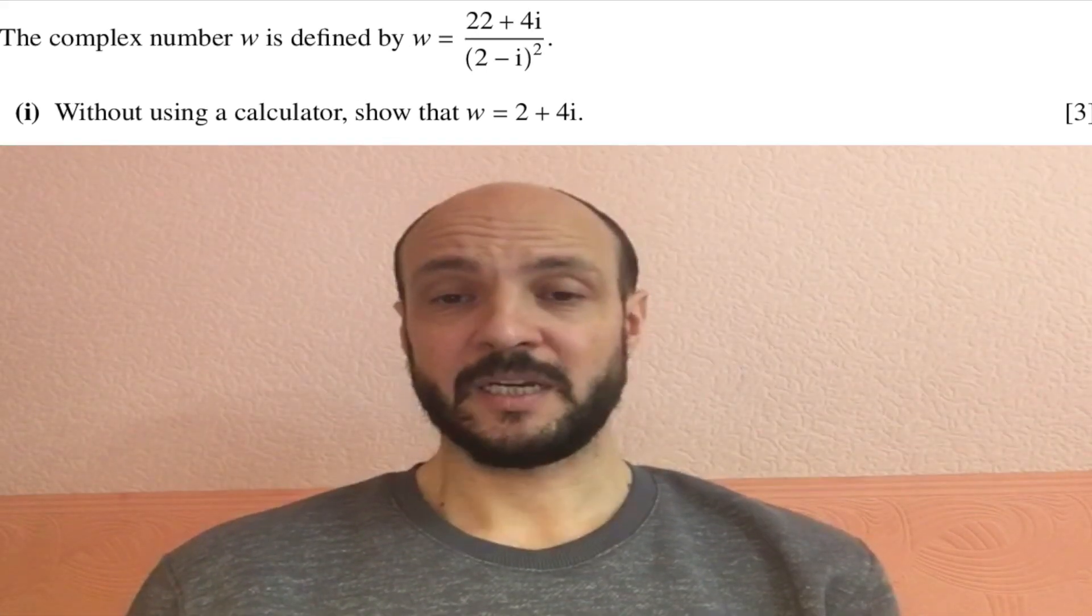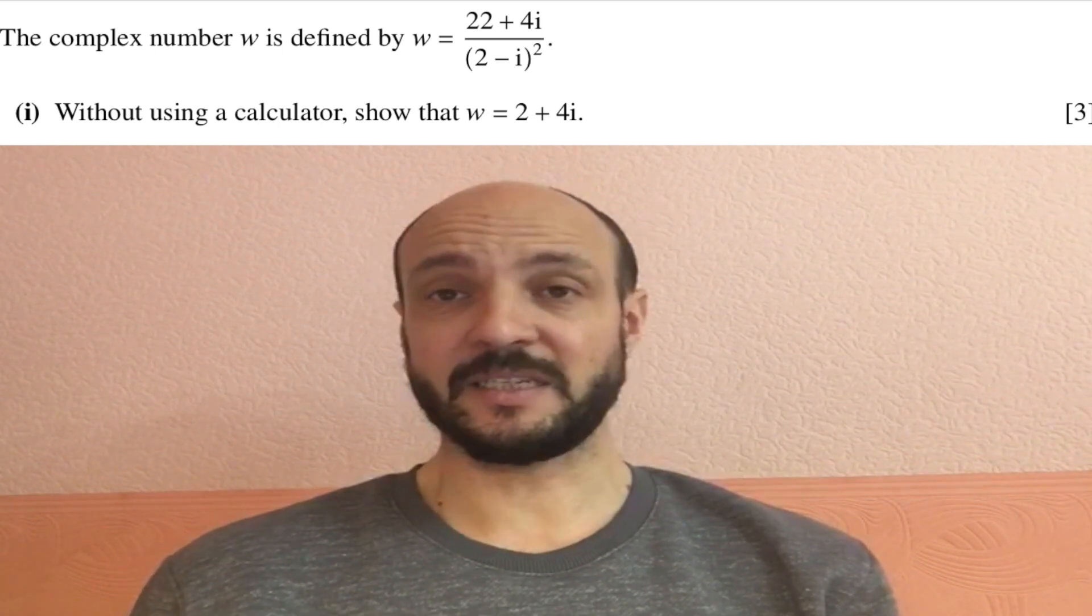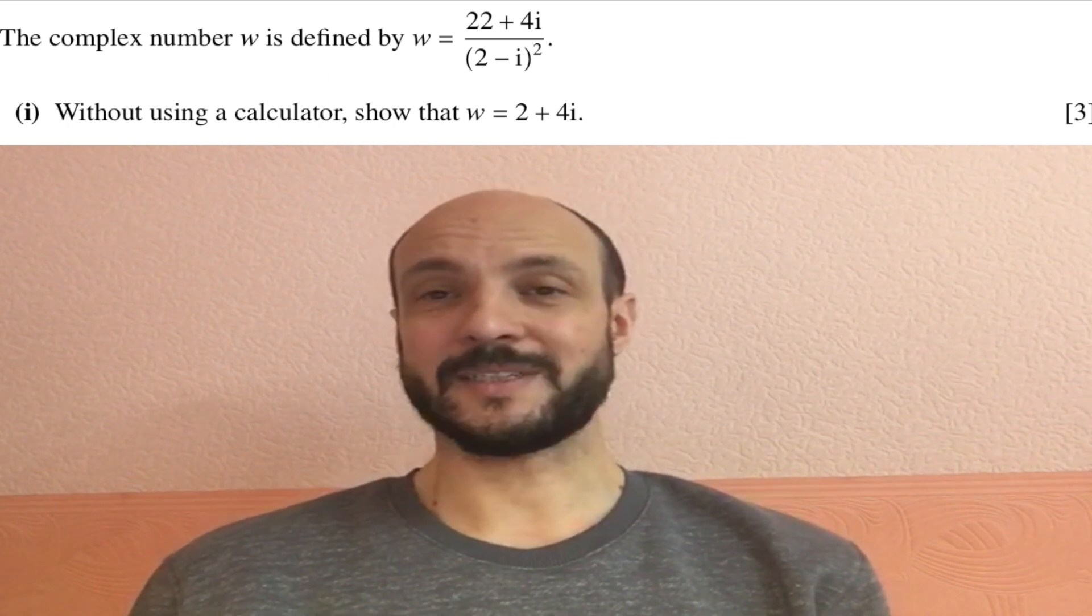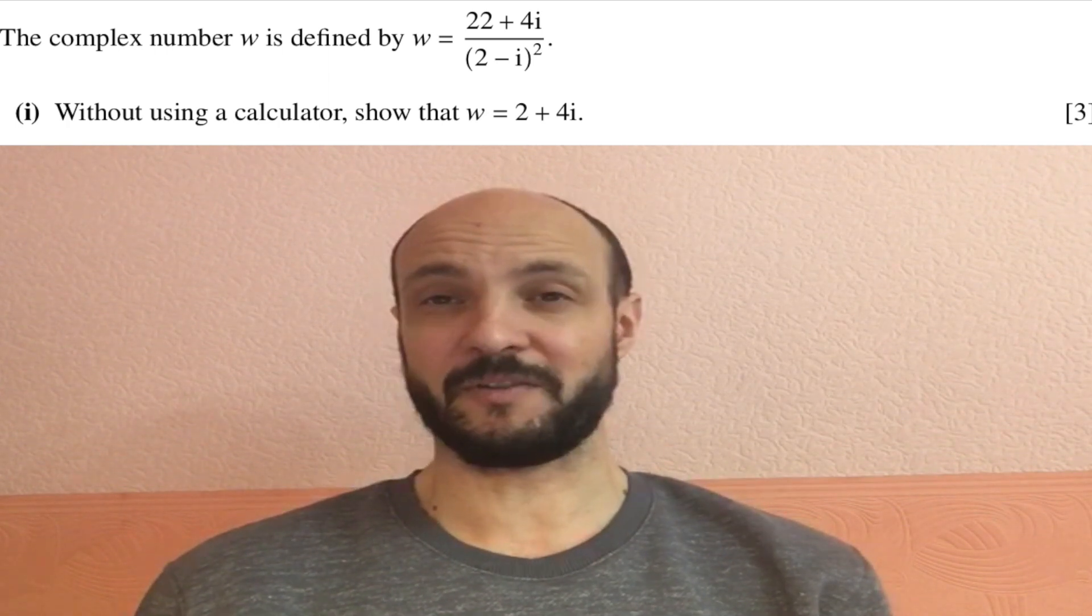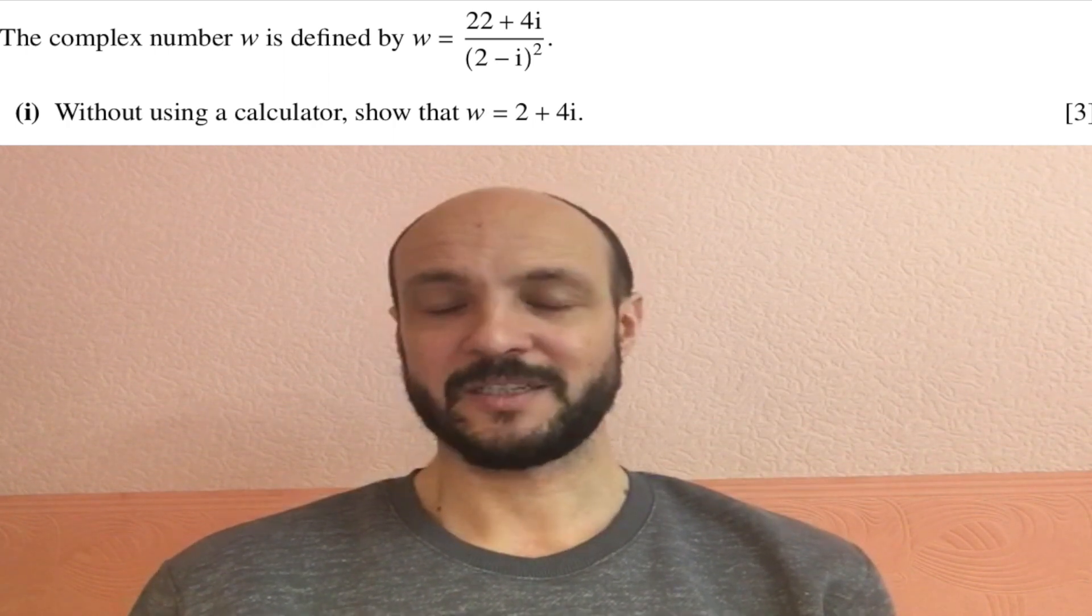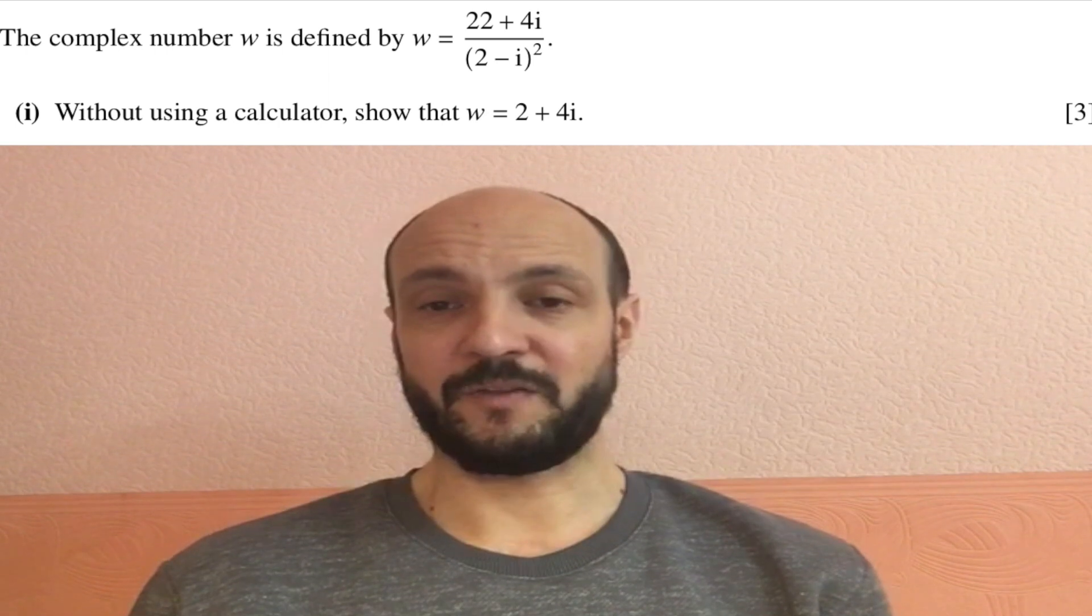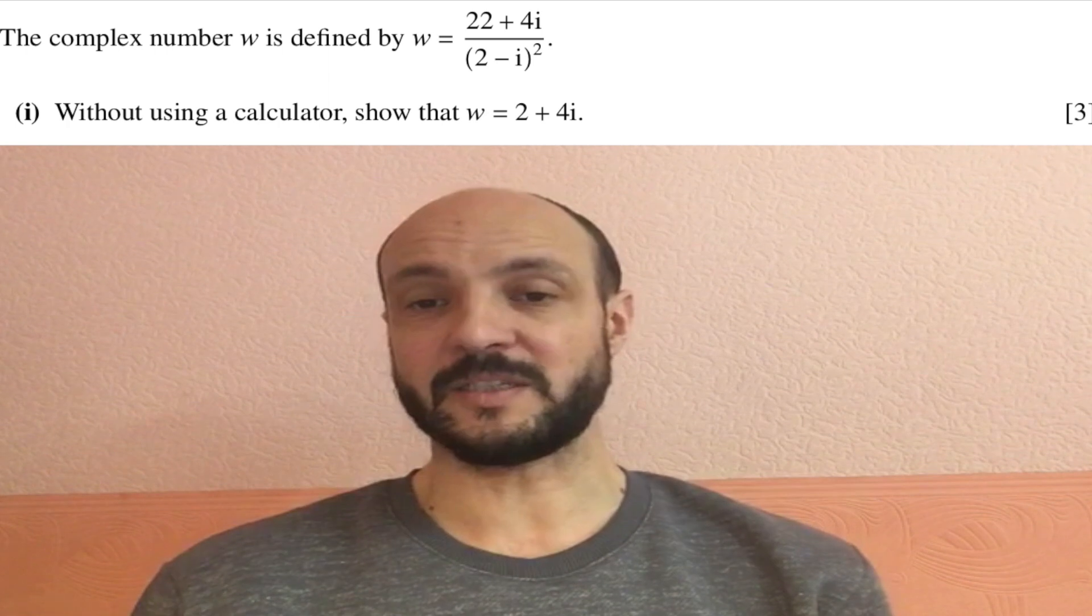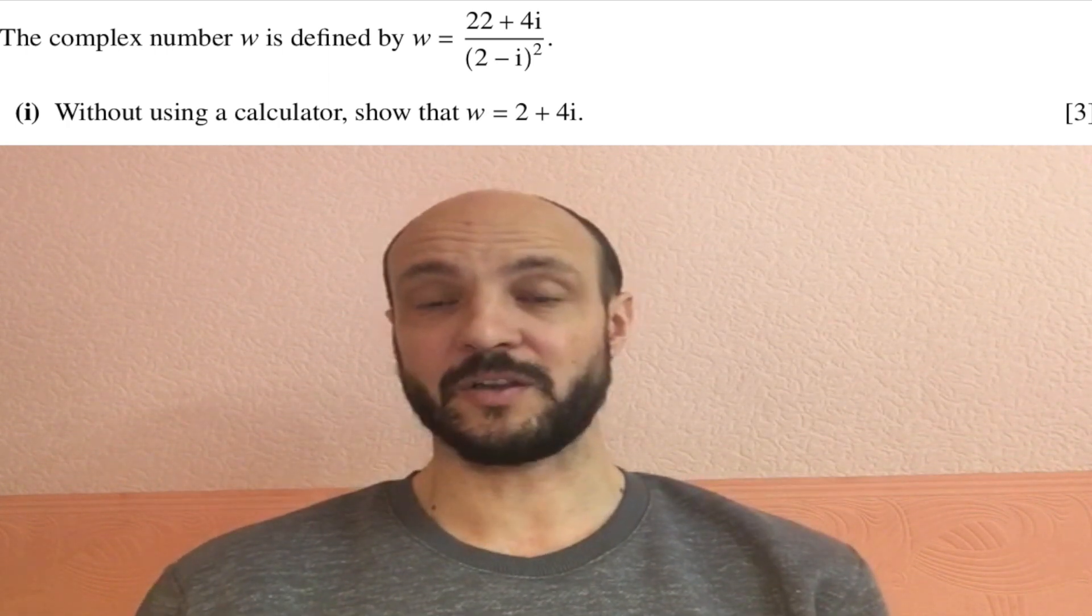Okay, so our first part, we have to show that this w, this fraction, is equal to 2 plus 4i. And whenever we're simplifying fractions, we want to get rid of anything complicated on the bottom part of the fraction, anything difficult like square roots or in this case imaginary numbers. So we're going to try to clean up the bottom of the fraction.